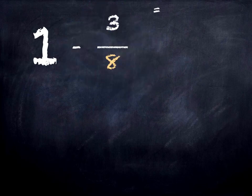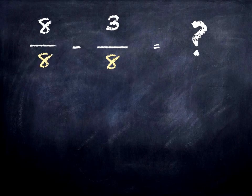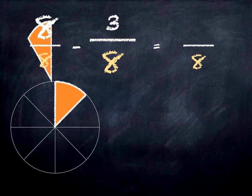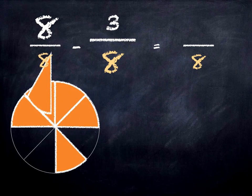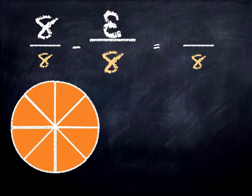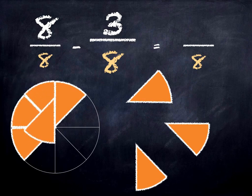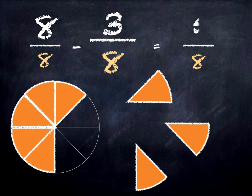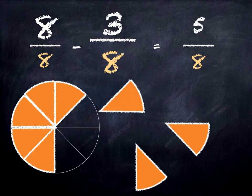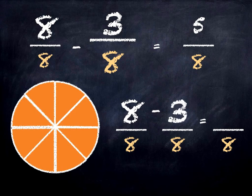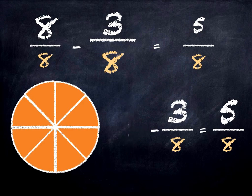Let's have a look at the next one: 1 take away 3 eighths. We know that 1 is the same as 8 eighths. Here's our whole, chopped into 8 equal pieces, and we're going to take 3 of them away. We have 5 eighths left. 8 eighths take away 3 eighths is 5 eighths. 8 take away 3 equals 5, and we know that 8 eighths is the same as 1, so 1 take away 3 eighths is 5 eighths.